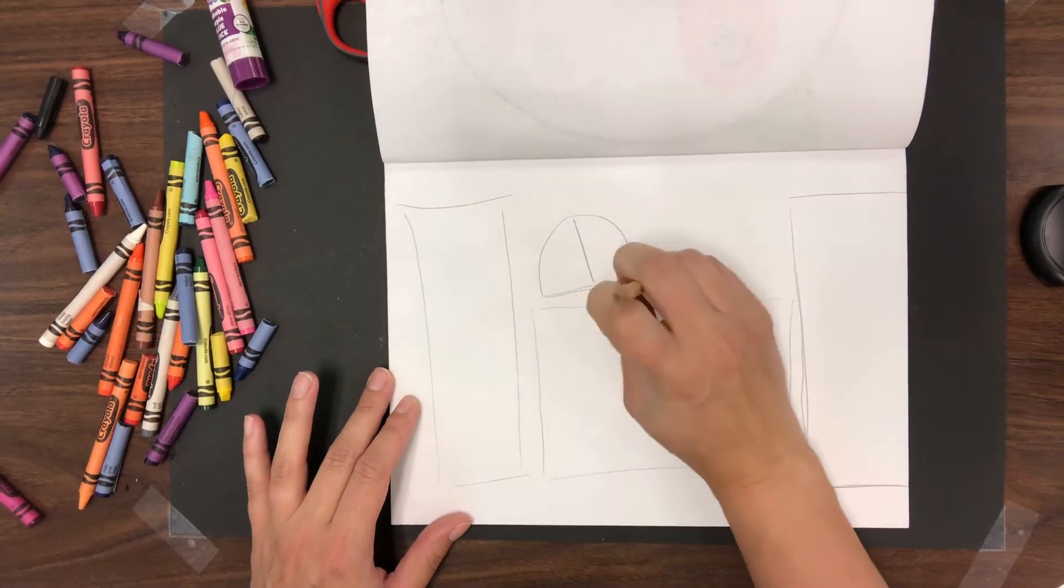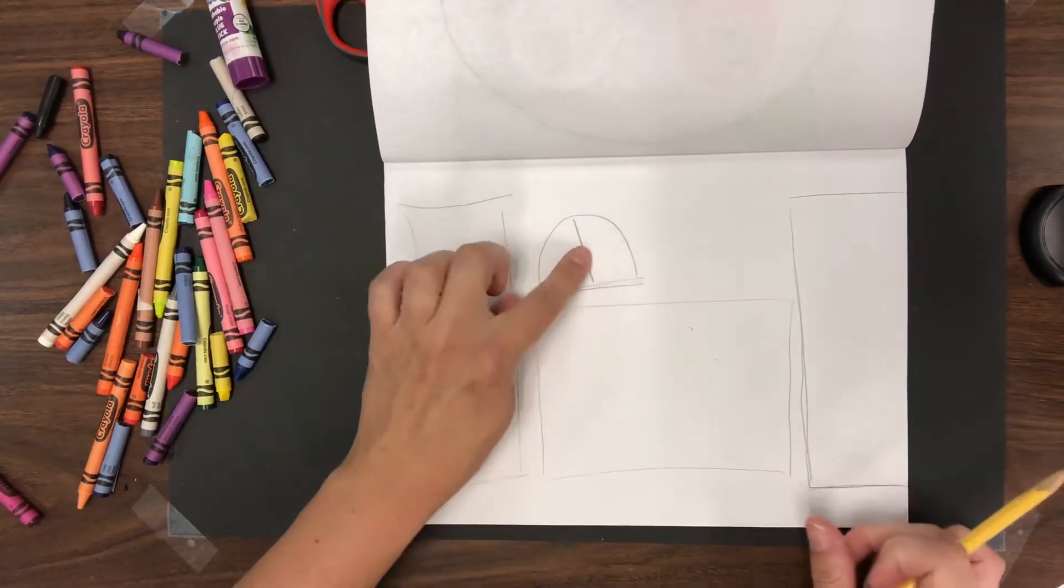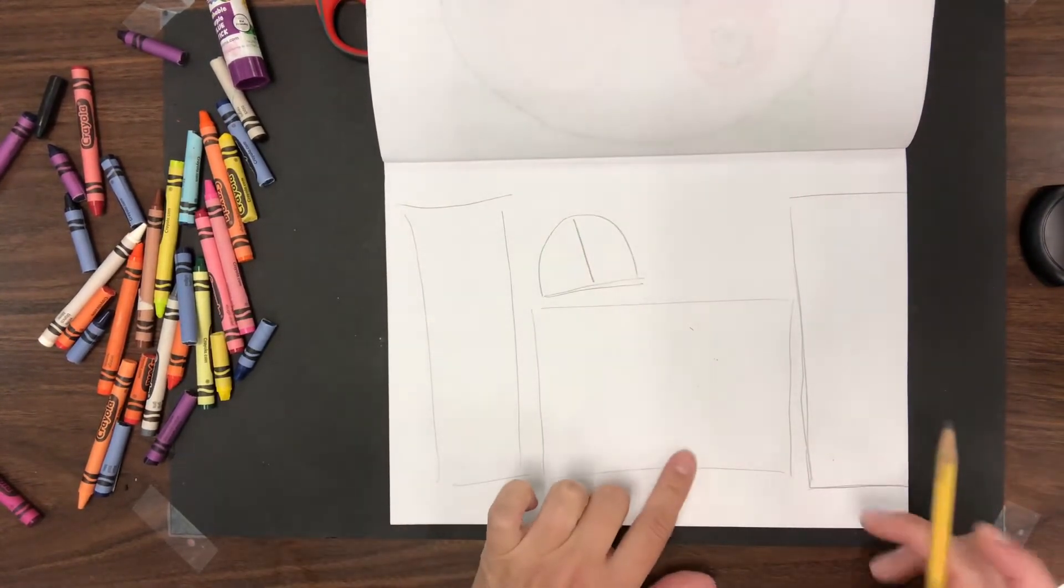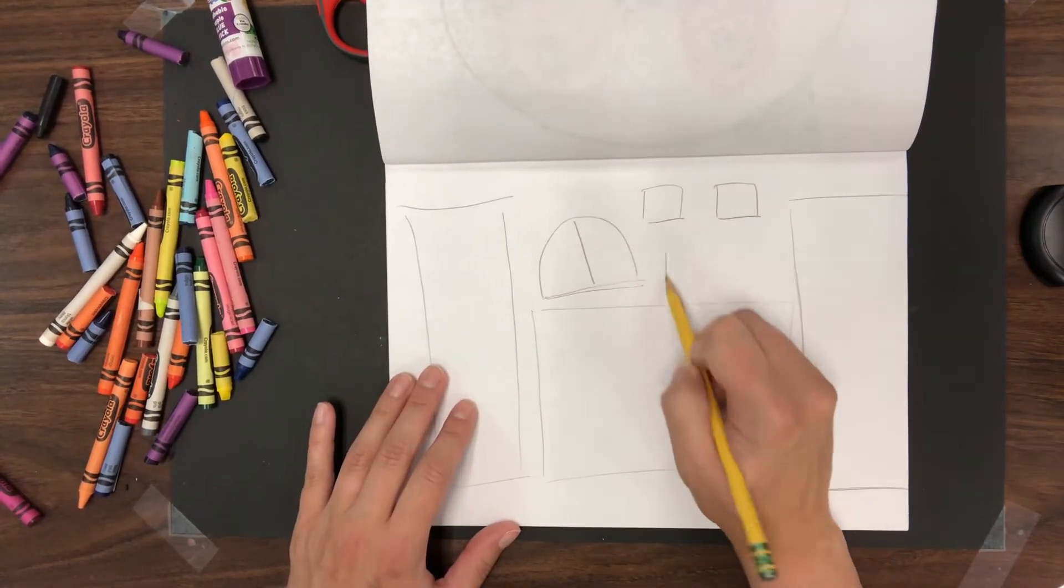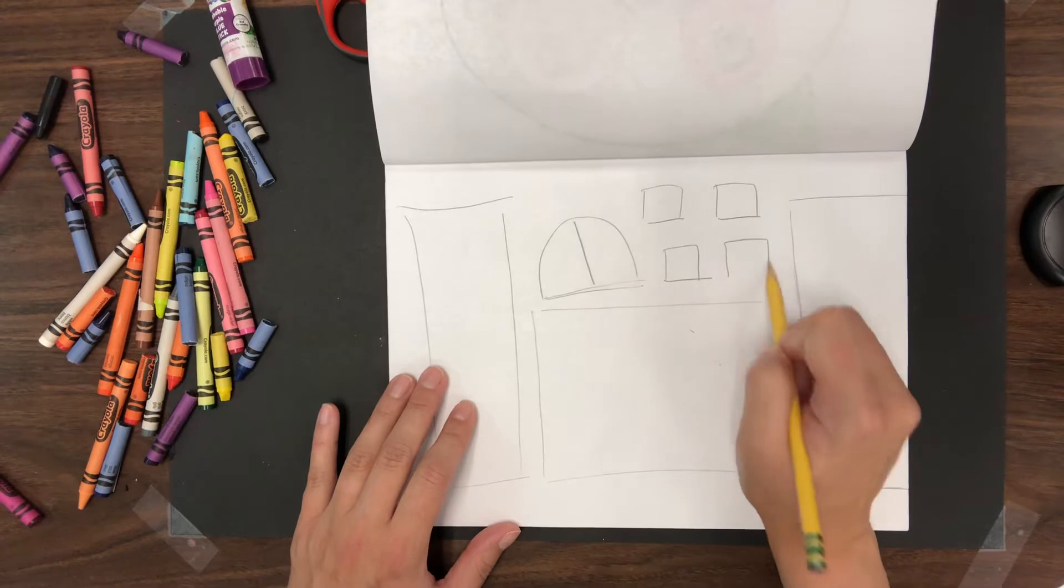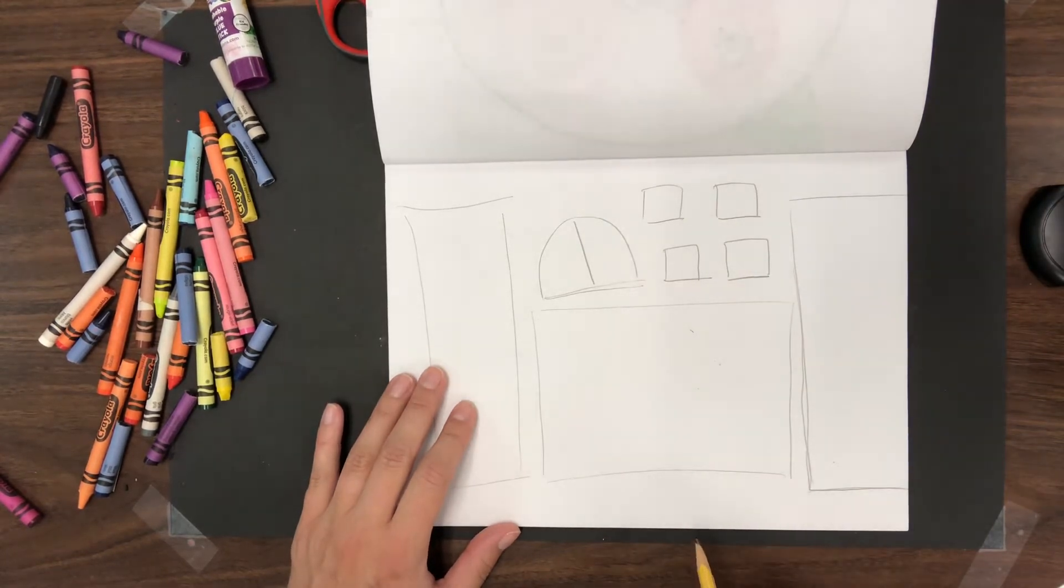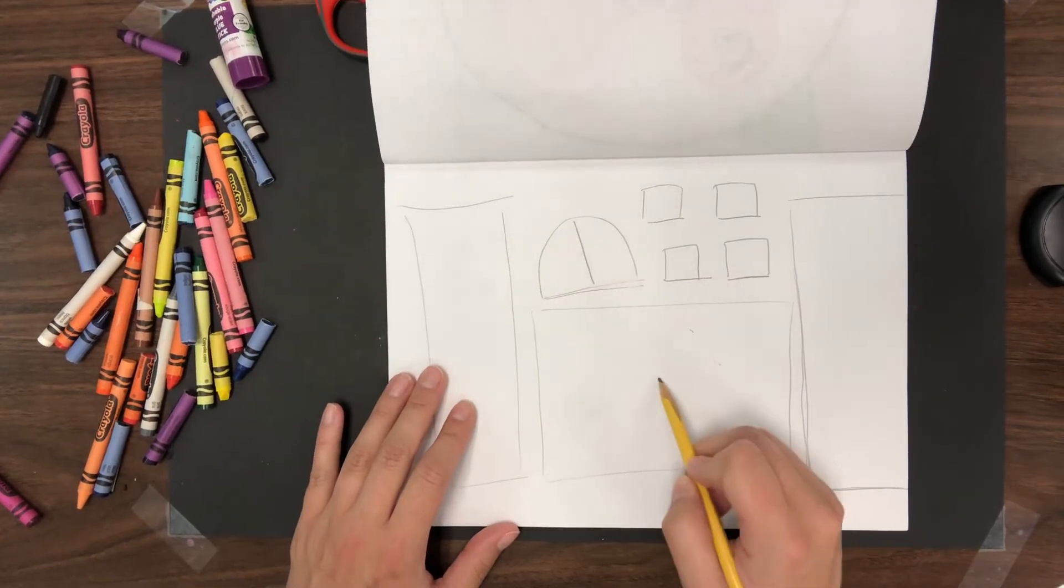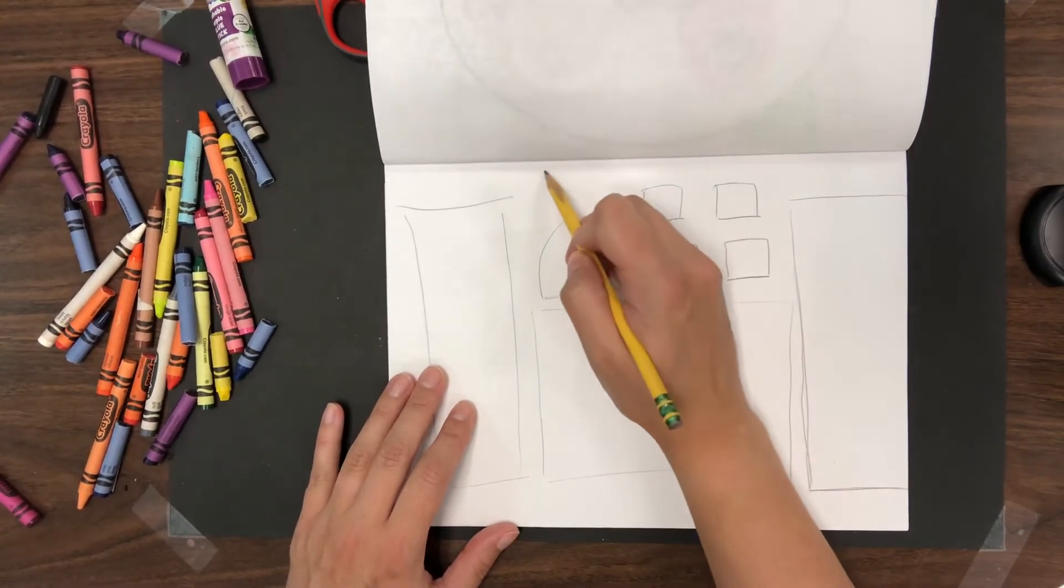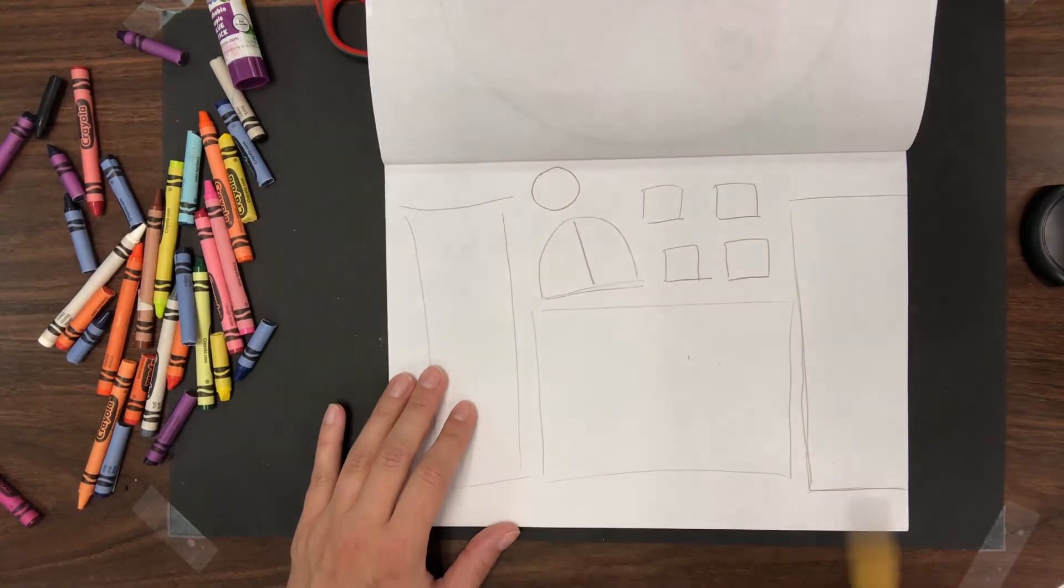Once that gets colored and cut out, it'll go down here. I know my castle is gonna need some windows - I'm gonna make maybe four of them. I think it might need a fancy window up above its door, so I might make a pretty circular kind of window too.